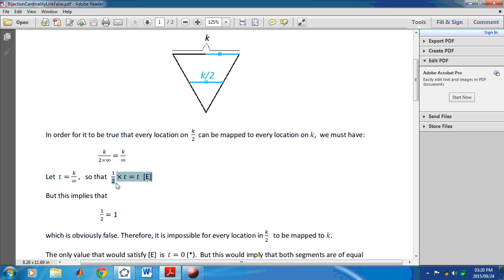But if we look at this, this implies that a half is equal to 1, right? Which is obviously false. Therefore, it is impossible for every location in k2 to be mapped to k, because a half is not equal to 1.